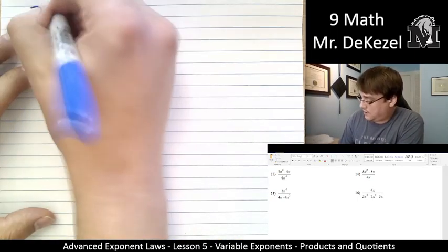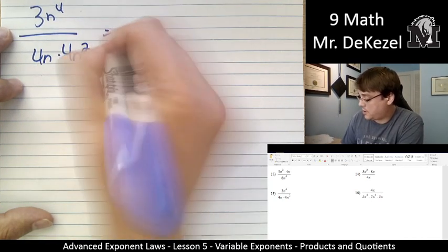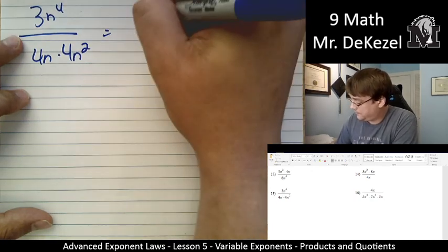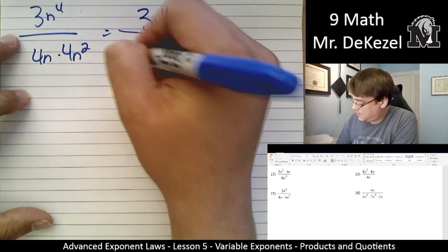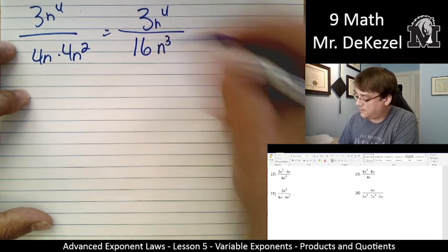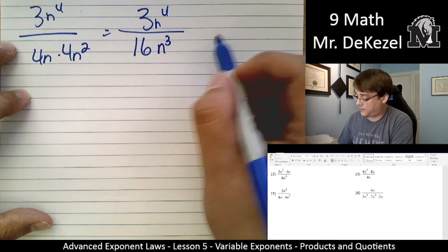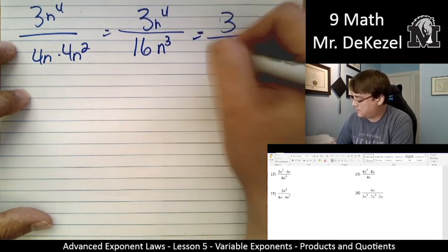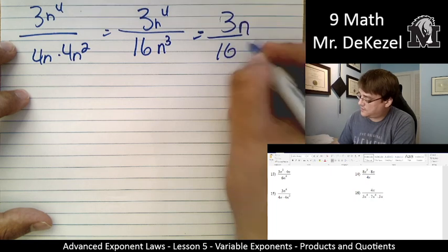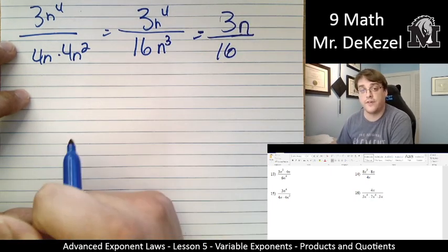Let's do 15. 3n to the power of 4 over 4n times 4n squared. Top and the bottom separately. 4 times 4 is 16. n times n squared is n to the power of 3. Reduced as much as it can already. 3 over 16. So we just go ahead and subtract the exponents. That just leaves us with n on top. 3n over 16 is our final answer.